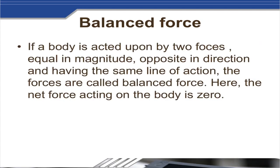Balanced force: if a body is acted upon by two forces equal in magnitude, opposite in direction, and having the same line of action, the forces are called balanced forces. The net force acting on the body is zero. For example, in a tug of war, if the pull from both sides is equal, the rope does not move. If the force is more on one side, the rope moves in that direction. Initially, when both teams pull with equal force, the forces are balanced.